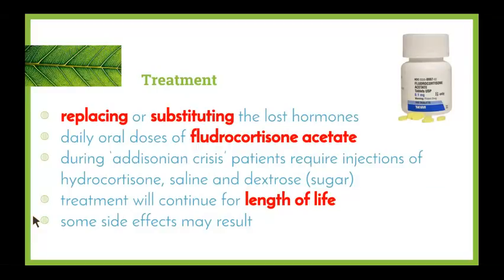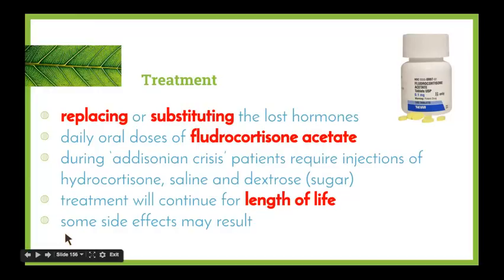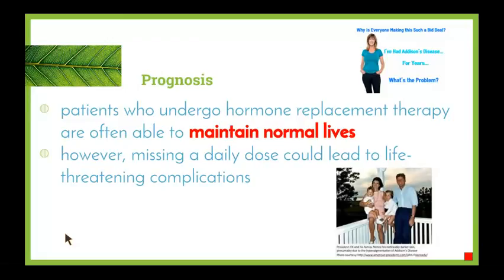Treatment involves replacing the absent hormones. Daily oral doses of fludrocortisone acetate are taken by the patient. During an Addisonian crisis — where symptoms are significantly exacerbated — patients can require injections of hydrocortisone, saline, and dextrose to help balance fluids. Treatment must continue for the patient's life, and some side effects may result. The prognosis is positive: patients who undergo hormone replacement therapy are often able to maintain normal lives, as long as they take their daily dose, otherwise it could lead to life-threatening complications.